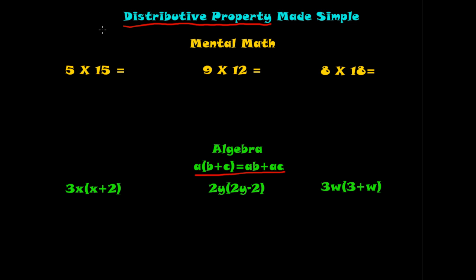Welcome to distributive property made simple. The distributive property is: a times (b plus c) is equal to a times b plus a times c. That doesn't make any sense yet — that's okay, because it hopefully will by the end of this video.